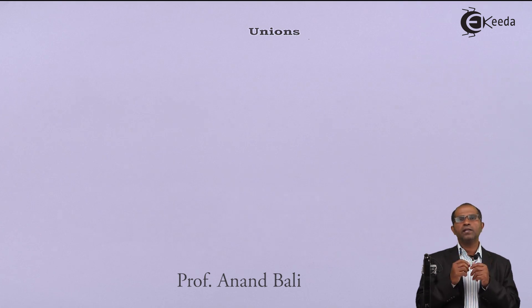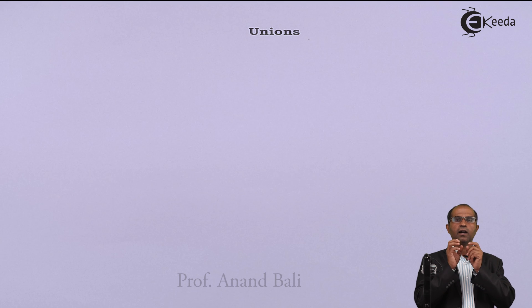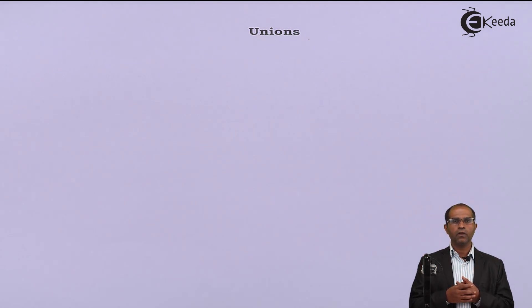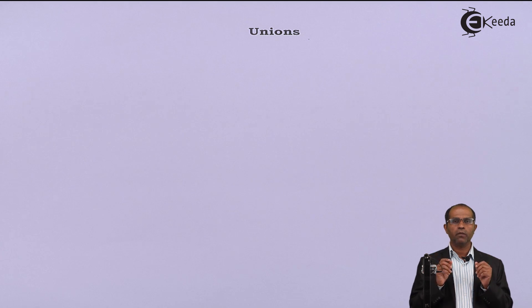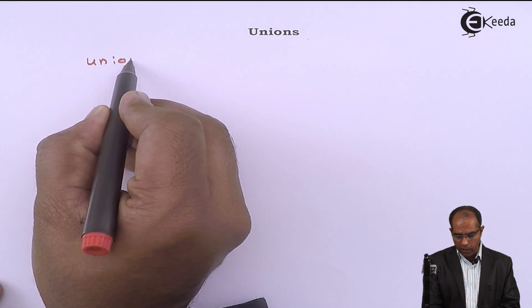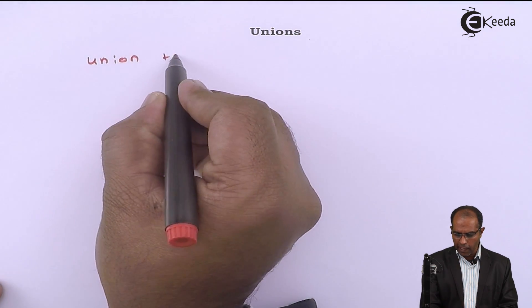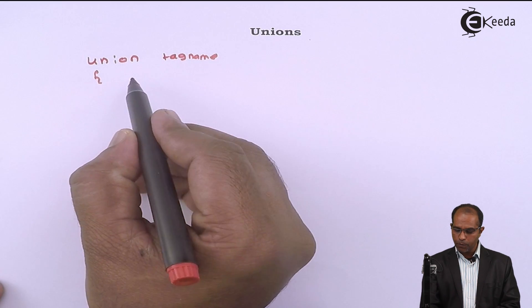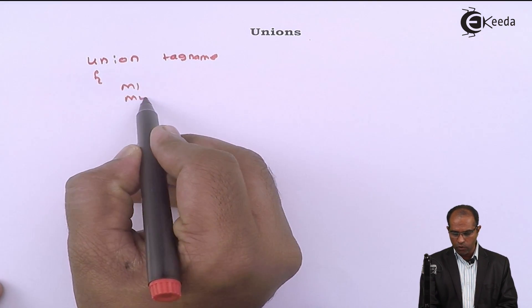Hello friends, let us now deal with one more type of data which is co-relevant with structures — we call that as unions. A union is again a collection of data, similar to how we described structures. The keyword is 'union', followed by a tag name, and then the data members: member one, member two, member three, and so on — any number of members of different types.